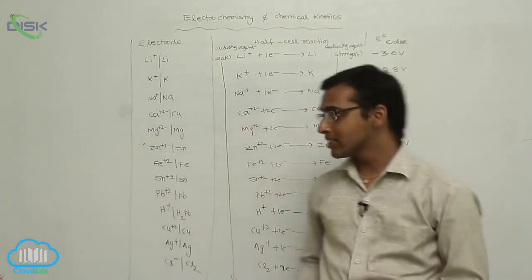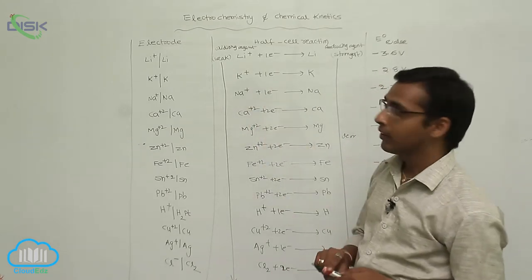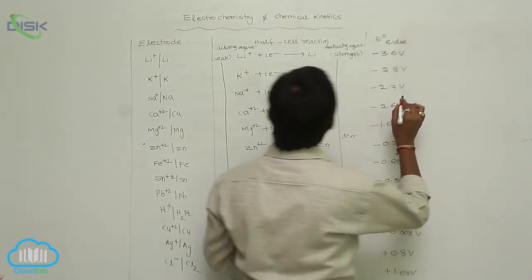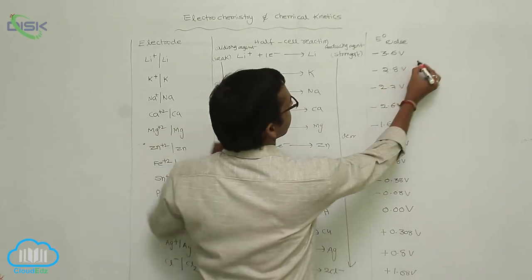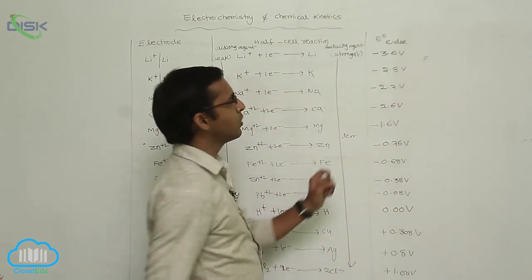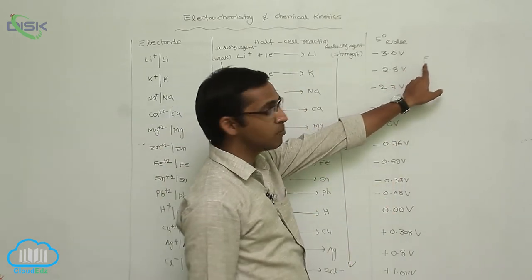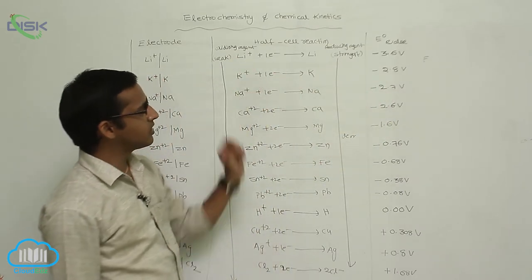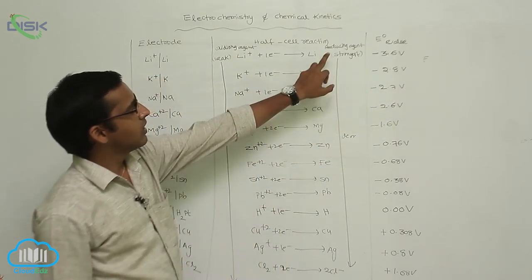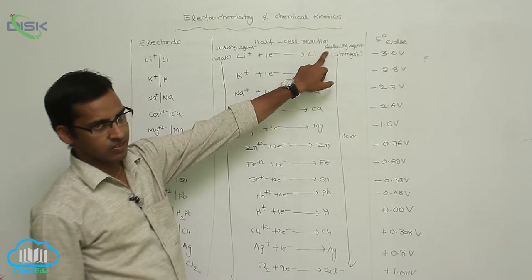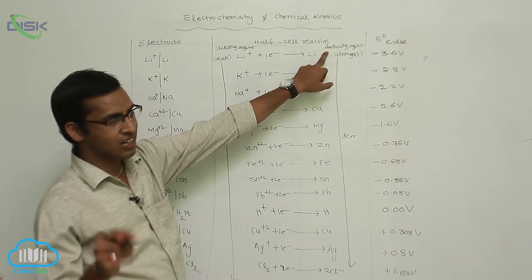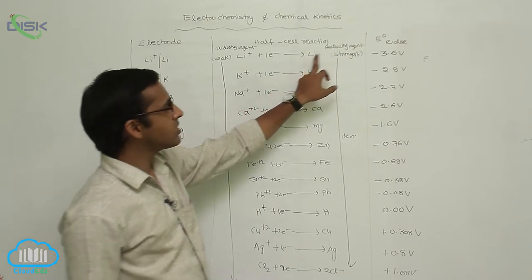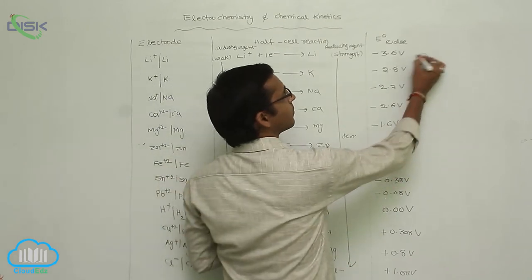In the electrochemical series, the weakest oxidizing agent is lithium, and the strongest oxidizing agent is fluorine. The strongest reducing agent is lithium, and the weakest reducing agent is fluorine.